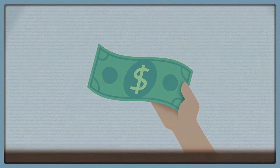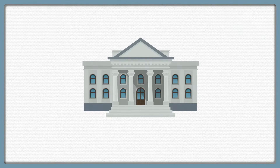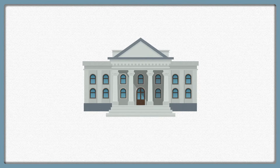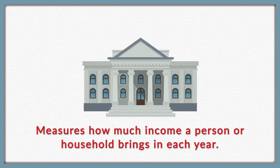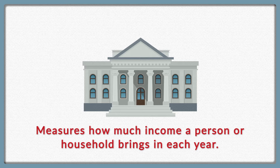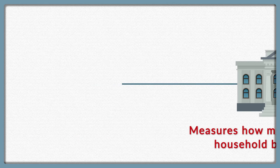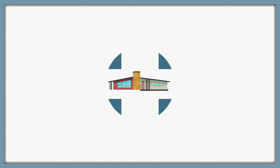When the U.S. government measures poverty to learn about how people are doing and to determine eligibility for social programs, for example, it uses an economic measure. And specifically, it's measuring how much income a person or a household brings in each year.